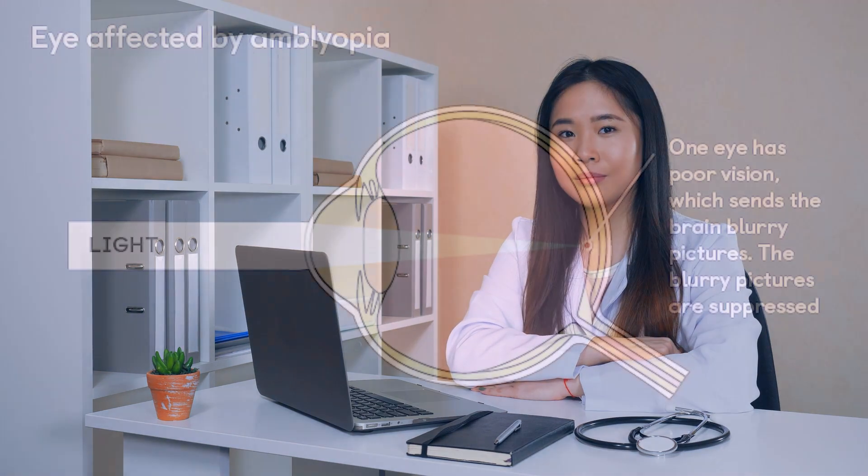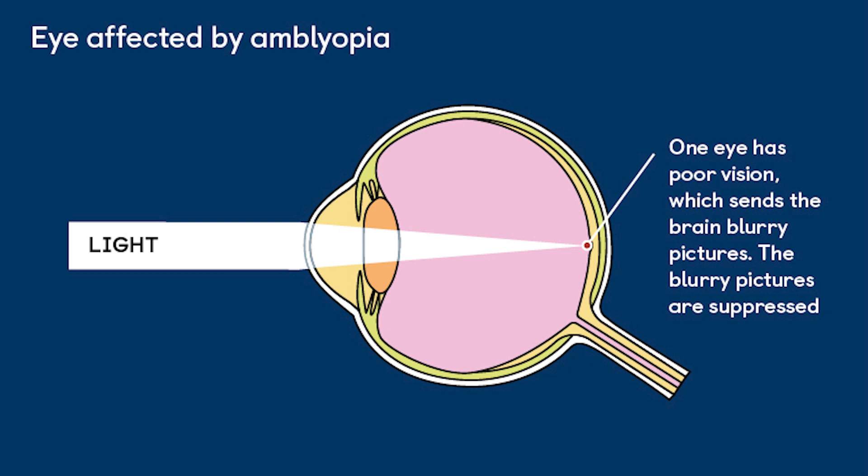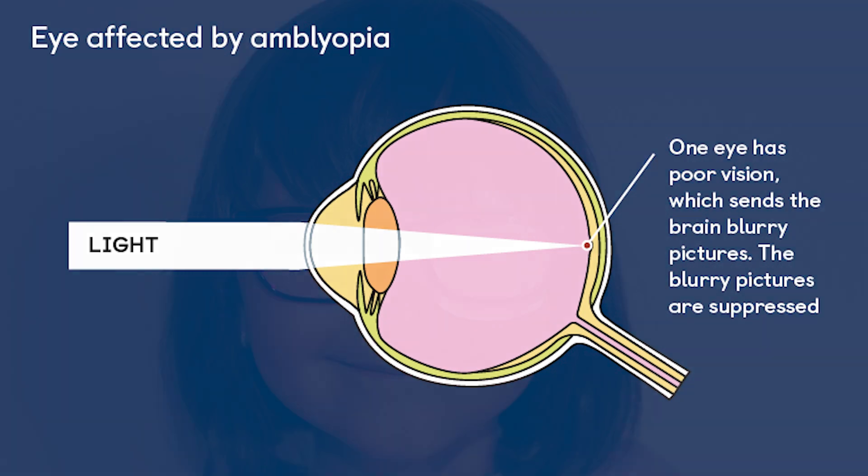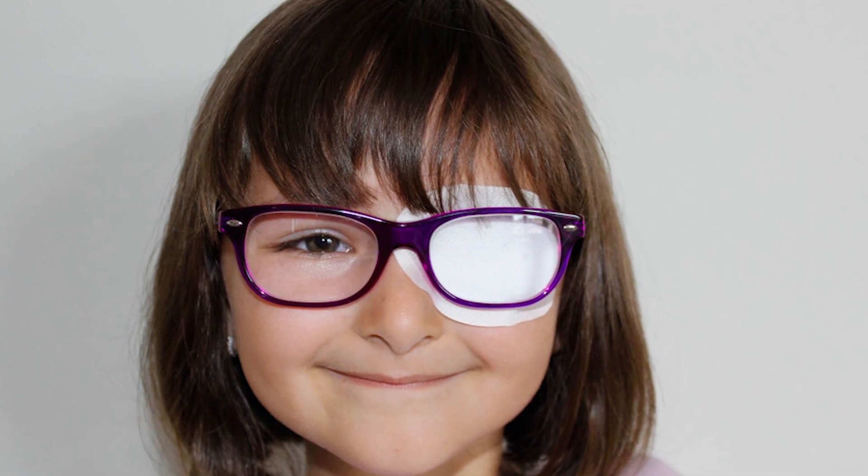Amblyopia is the most common reason for vision loss in kids, affecting 2% to 4% of children through the age of 15 years. It can occur even if a child has no noticeable problems. Amblyopia occurs when there is a major difference between the two eyes in their ability to focus. The most common cause is other vision problems, and its treatment is as simple as putting on an eye patch or glasses.